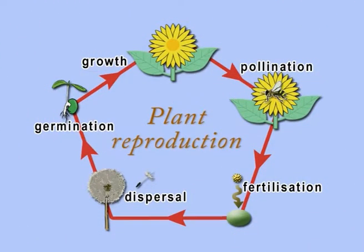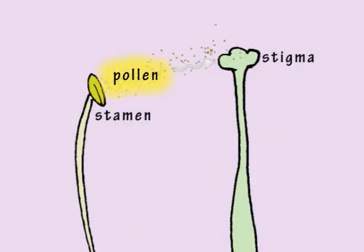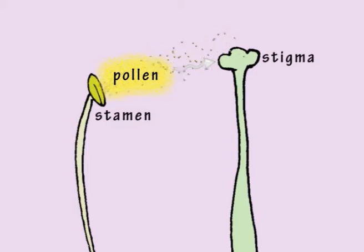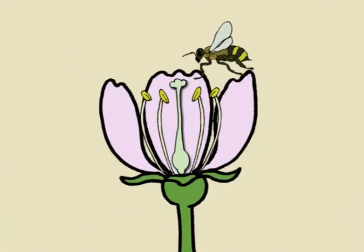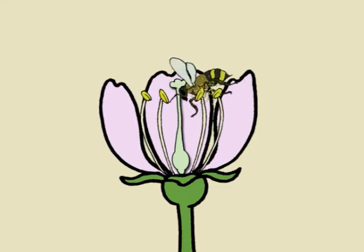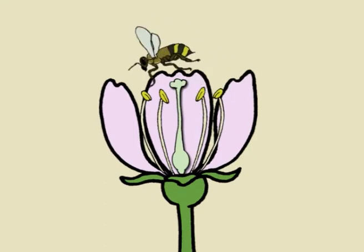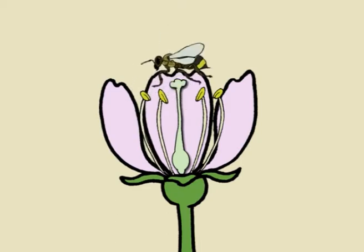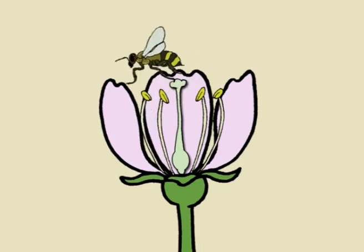Some plants use insects to help with pollination. This is the way in which pollen gets transferred from the stamen to the stigma. The colour and smell of flowers attract insects, which come to gather sugary nectar from the flowers. While they are doing this, they get covered in pollen and transfer it to the stigma.